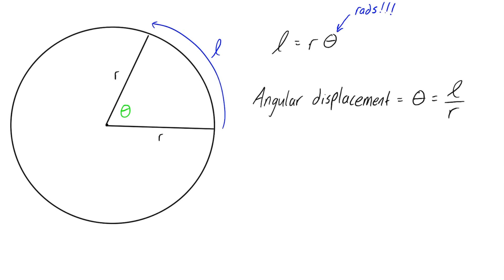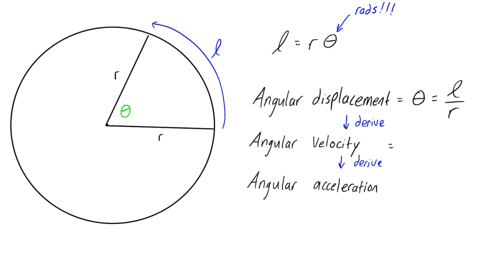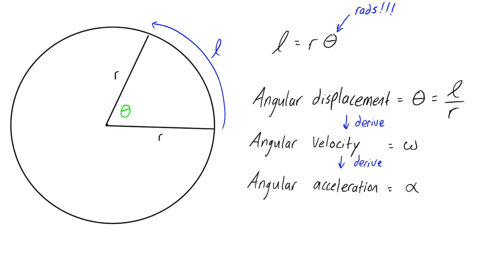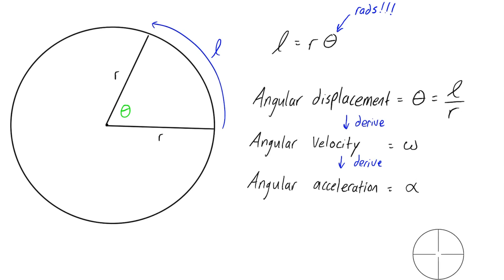Angular displacement is to circular motion as displacement is to linear motion. If we derive angular displacement we get angular velocity, and deriving that again gives angular acceleration. The symbols are omega for angular velocity and alpha for angular acceleration. Ignoring the word 'angular', it's just displacement, velocity, acceleration — all rates of change of each other. In the linear case, instead of theta, omega, and alpha, we have s, v, and a.